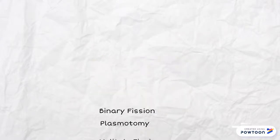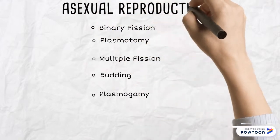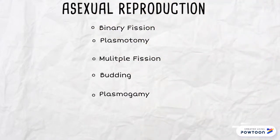There are five types of asexual reproduction. The first one is binary fission, the second one is plasmotomy, the third one is multiple fission, the fourth one is budding, and lastly, plasmogamy.